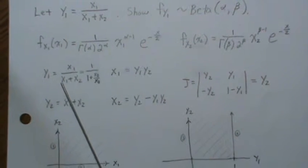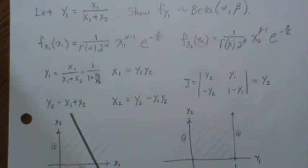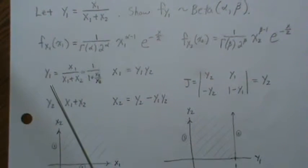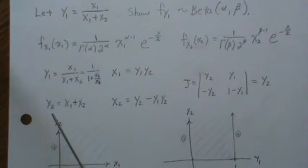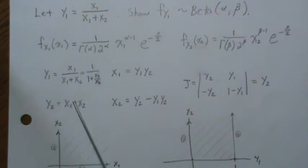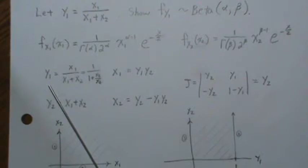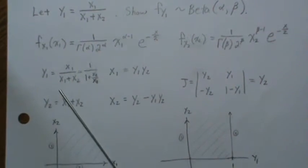So what we do is we create another variable. This is the original and this is the Y2 that we're going to create. We're going to find the joint distribution of Y1 and Y2 and then integrate out Y2 to find the density of Y1.